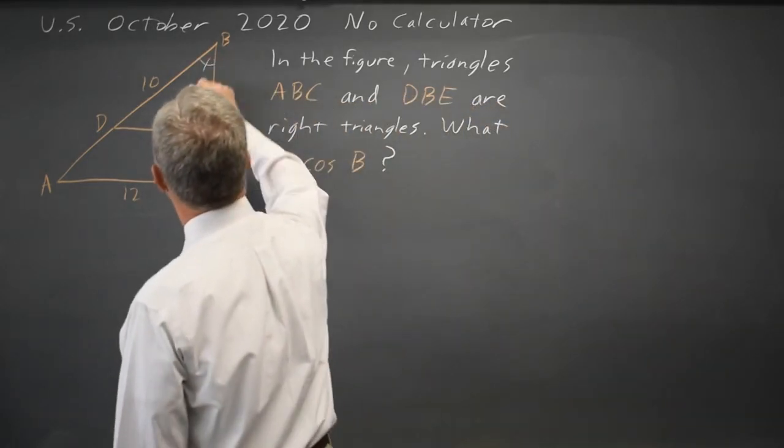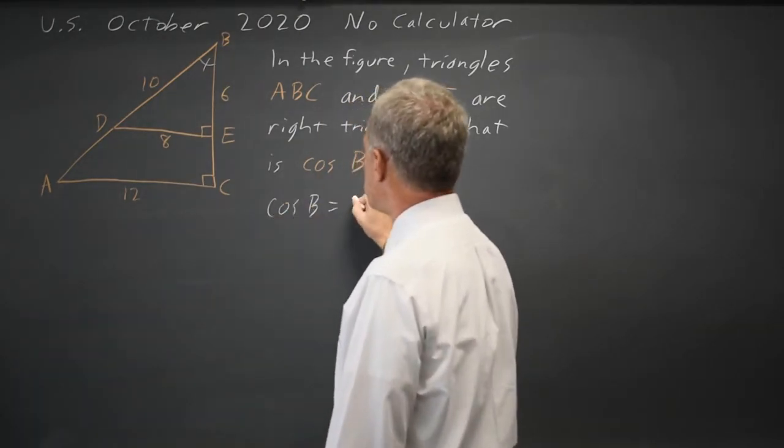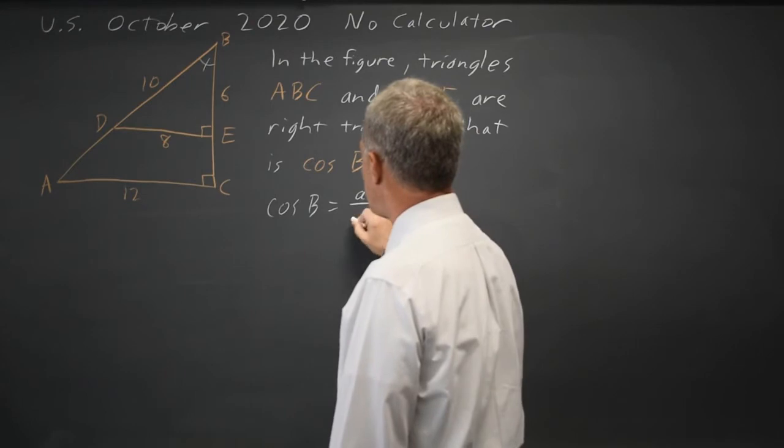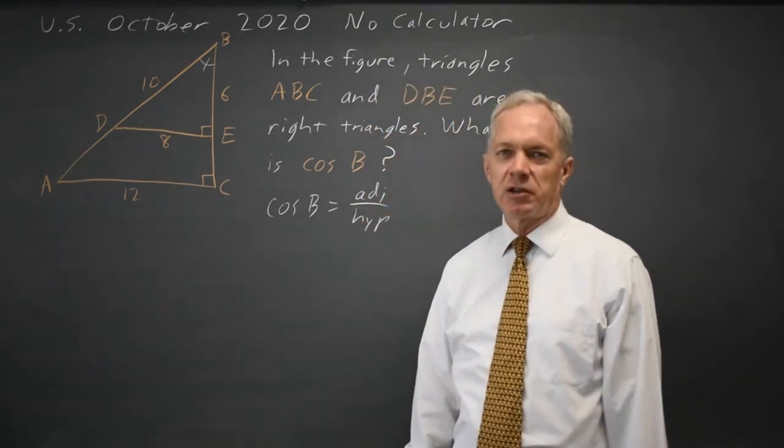The cosine of angle B, which is this angle here, is the adjacent side over the hypotenuse of either right triangle that includes angle B.